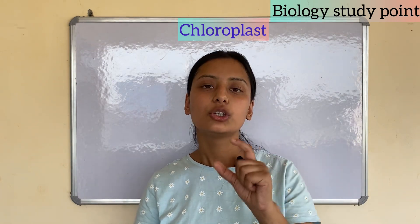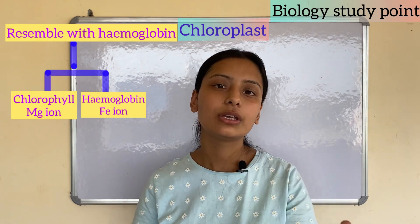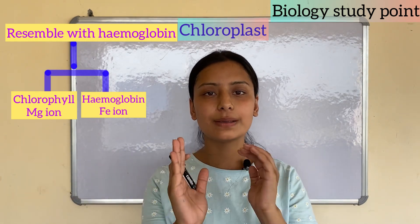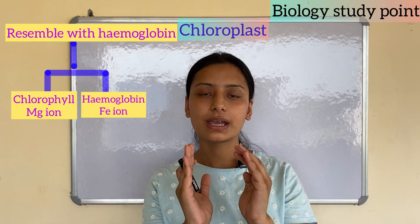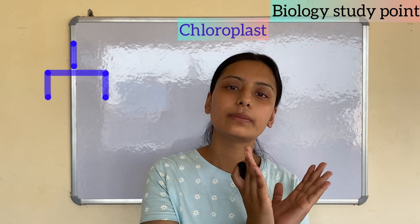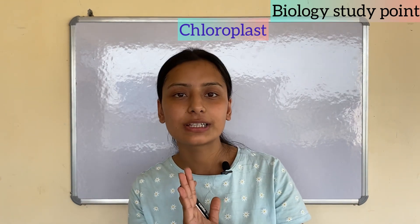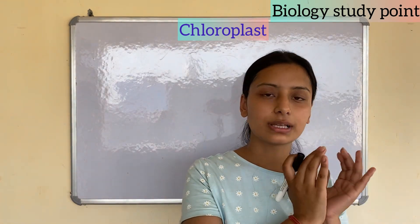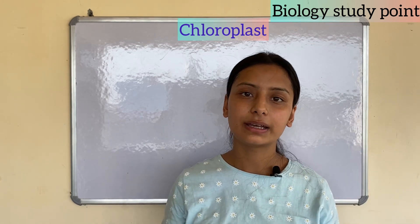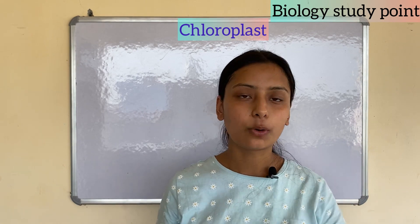Chlorophyll resembles hemoglobin — they function similarly. The difference is that chlorophyll contains magnesium, while hemoglobin contains iron. Both perform analogous roles: chlorophyll absorbs sunlight for photosynthesis, while hemoglobin in human blood carries oxygen to all body organs and parts.